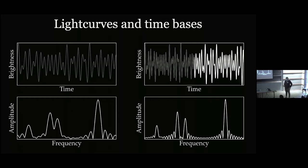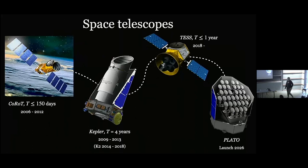Space telescopes have been crucial for asteroseismology. The nominal Kepler space mission, which observed the same patch of sky for four years continuously, still provides the best available data. TESS is currently observing, with the longest continuous light curves — about one year — available for stars in its continuous viewing zone.